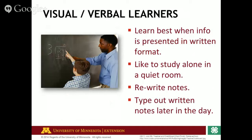Visual verbal learners learn best when information is presented to them in a written format. They like to study alone in a quiet room. They'll rewrite notes that they take while you're speaking, and they might even go home and type out those rewritten notes a day later. They have to see that information written down — that's how they're going to recall it, remembering what they visually saw written down on paper.